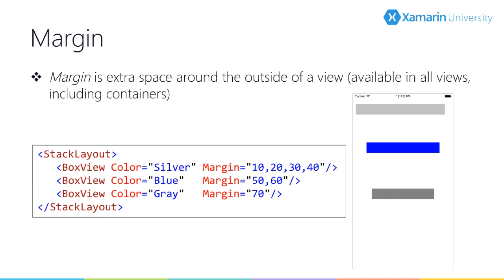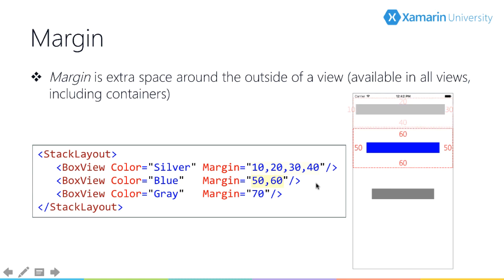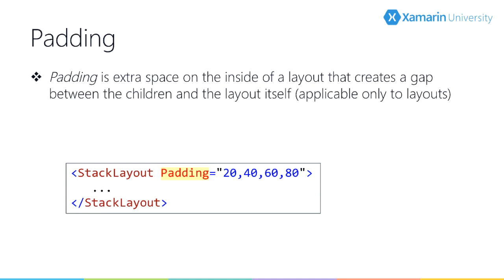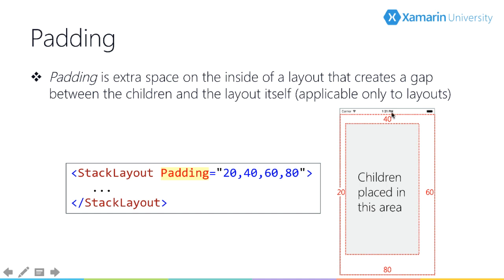If you need to do a minor adjustment to positioning, you can use margin. Margin adds extra space around the outside of your view. The type of margin is a struct called Thickness, and there are three ways to create them: left, top, right, and bottom separately; first value for left and right, second for top and bottom; or a single value used on all four sides. Padding is different — it only applies to layout containers, not individual views like button and label. Padding means extra space around the inside of the container, decreasing the room where children can be placed.